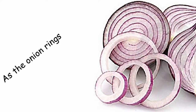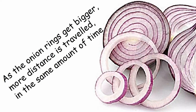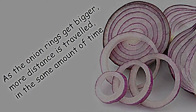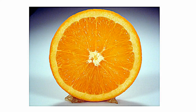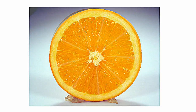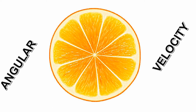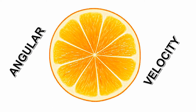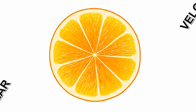As the onion rings get bigger, more distance is travelled in the same amount of time. Angular velocity is just a descriptive term for the wedge shapes formed by partial revolutions.